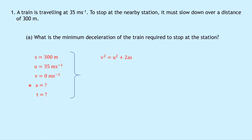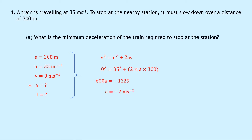Writing down that equation and substituting in our numbers, we have 0 squared equals 35 squared plus 2 times A times 300. Simplifying both sides, we get 600A is equal to minus 1225, and dividing both sides by 600 gives A equals minus 2 metres per second squared.